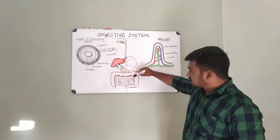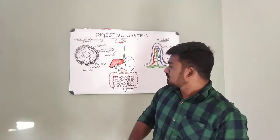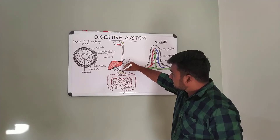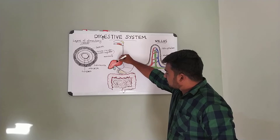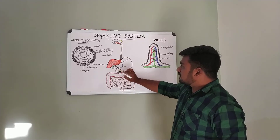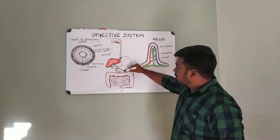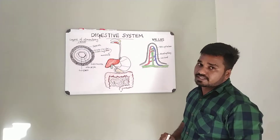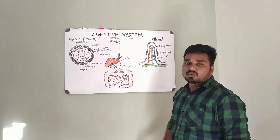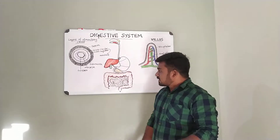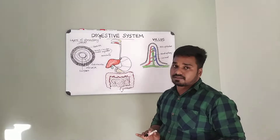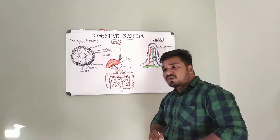The small intestine is approximately 5 meters long and has three parts: the duodenum, jejunum, and ileum. The duodenum receives secretions from the pancreas and liver. The small intestine has a microscopic structure featuring permanent folds and finger-like projections called villi, which greatly increase the surface area for digestion and absorption.